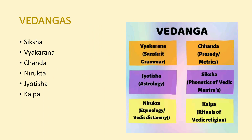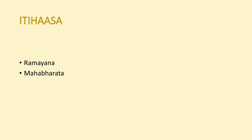There are six elements of the Vedangas: Shiksha, which is the phonetics of the Vedic mantra; Vyakarana, or Sanskrit grammar; Chanda, or prosody and meter; Nirukta, or etymology and Vedic dictionary; Jyotisha, or astrology; and Kalpa, which covers the rituals of Vedic religion.